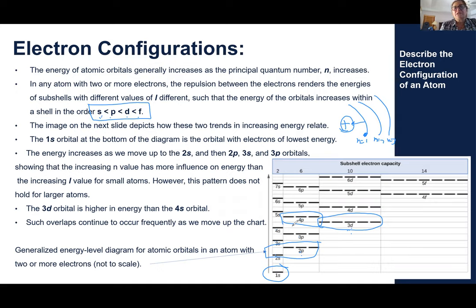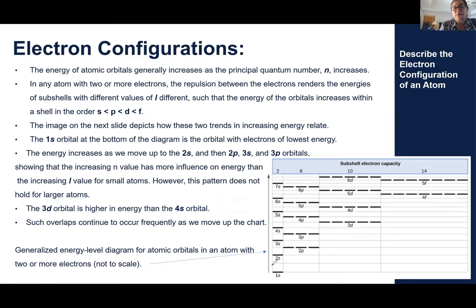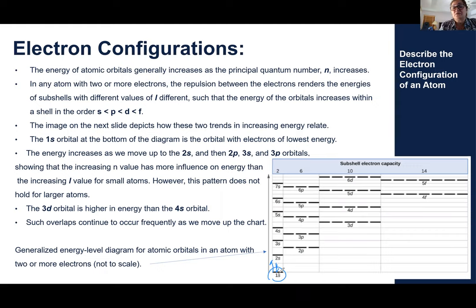Each orbital can take only two electrons. For level one, when we have only one S, we get only two electrons, and they are drawn with opposite spin — one arrow up, one arrow down, meaning one spins clockwise and one counterclockwise. After 1S is filled up, because it has the lowest energy and based on the Aufbau principle, the orbital with lower energy fills first, then it will go to 2S. One electron, two electrons, and it stops. No more electrons can go to 2S because it's occupied.